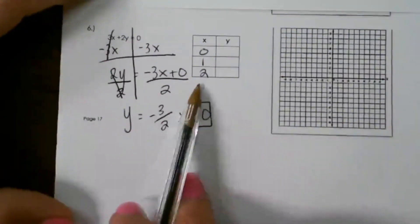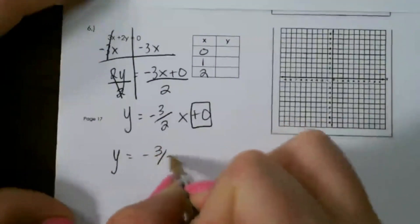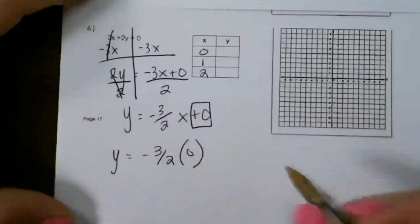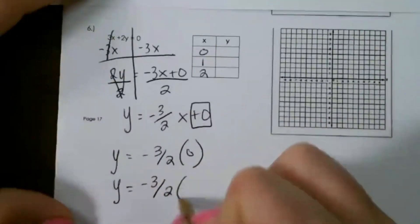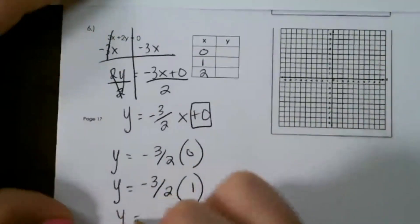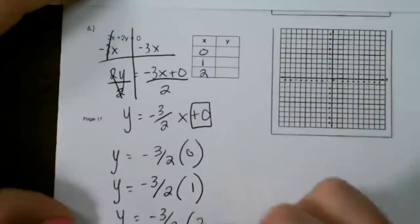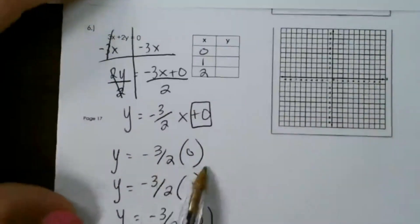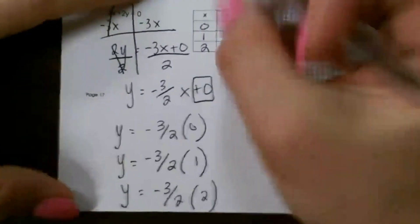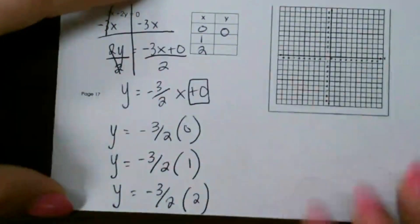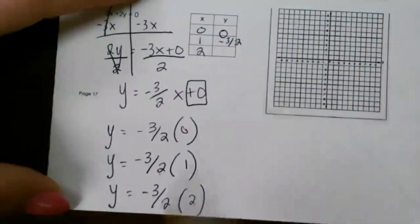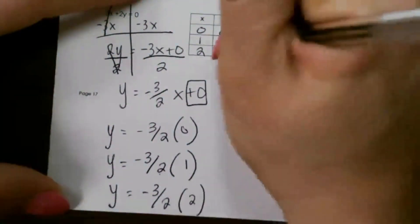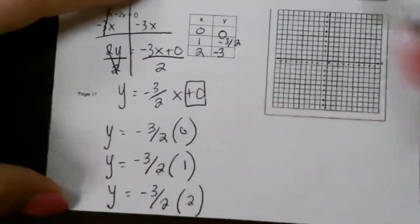So then we use our input values to solve for our outputs. We plug each of these in and solve for our outputs. So our first one, negative 3 halves times 0 would be 0. So that would be our first ordered pair. Negative 3 halves times 1 is negative 3 halves. So those are our ordered pairs.